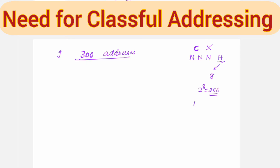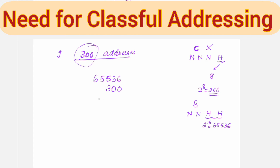Then I consider Class B. In Class B, there are 16 bits for the host part, and 2 to the power of 16 is 65,536. If I take any Class B network, 65,536 IP addresses are possible, but my requirement is only 300. So when I use 300 from this network, I will be wasting 65,236 addresses — paying for them but not making use of them.